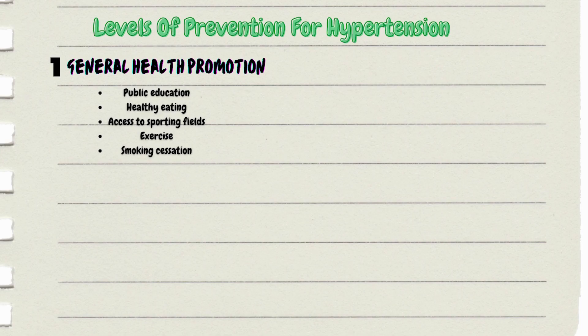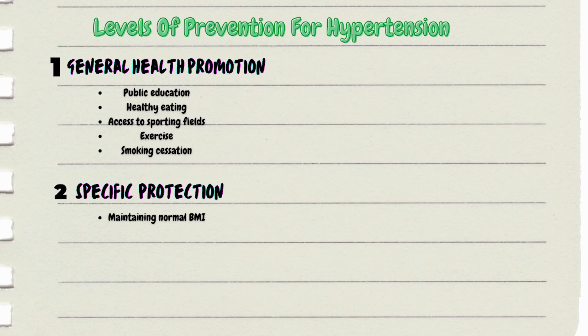The last case example is hypertension. For level one, general health promotion, number one is public education; then nutritional factors like healthy eating; environmental factors like access to sporting fields; lifestyle modification like smoking cessation and alcohol moderation; and government policies like increasing taxes on fast food joints. For level two, specific protection, hypertension has no vaccine and we cannot isolate cases or use PPE, but we can maintain a healthy BMI, which can serve as the specific protection measure.